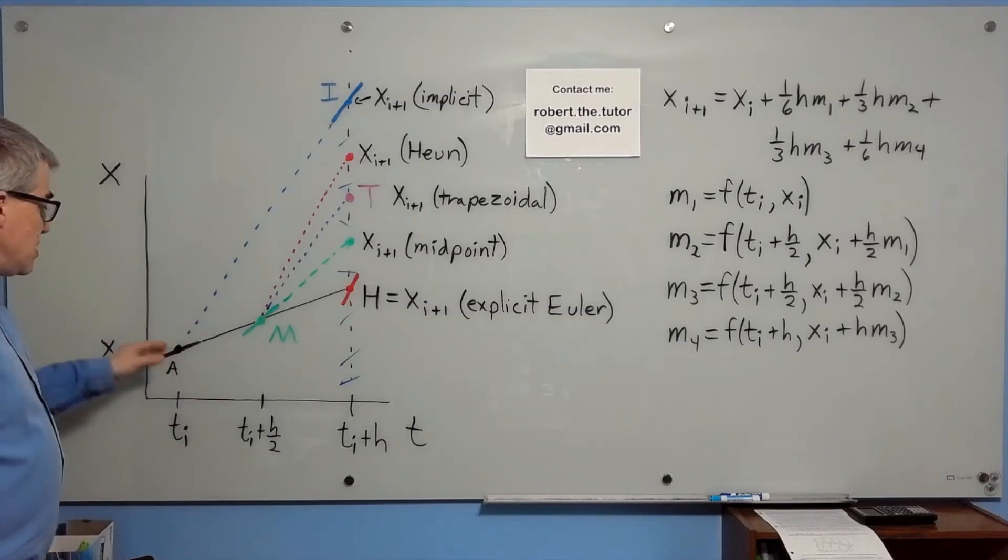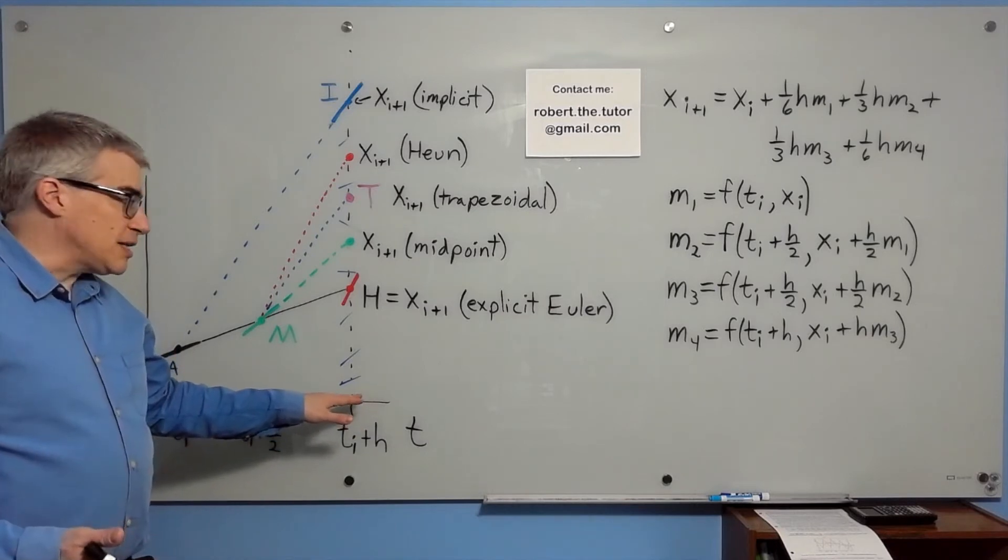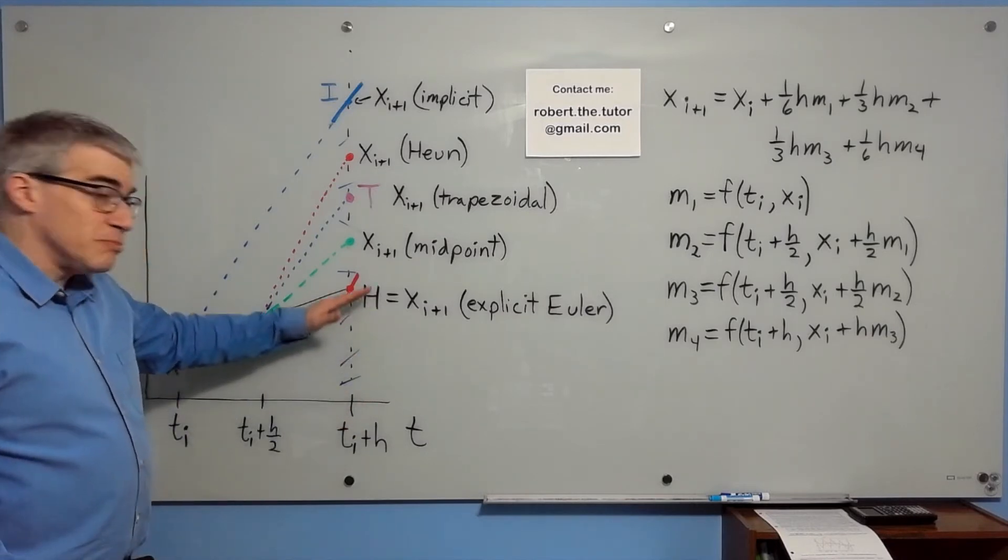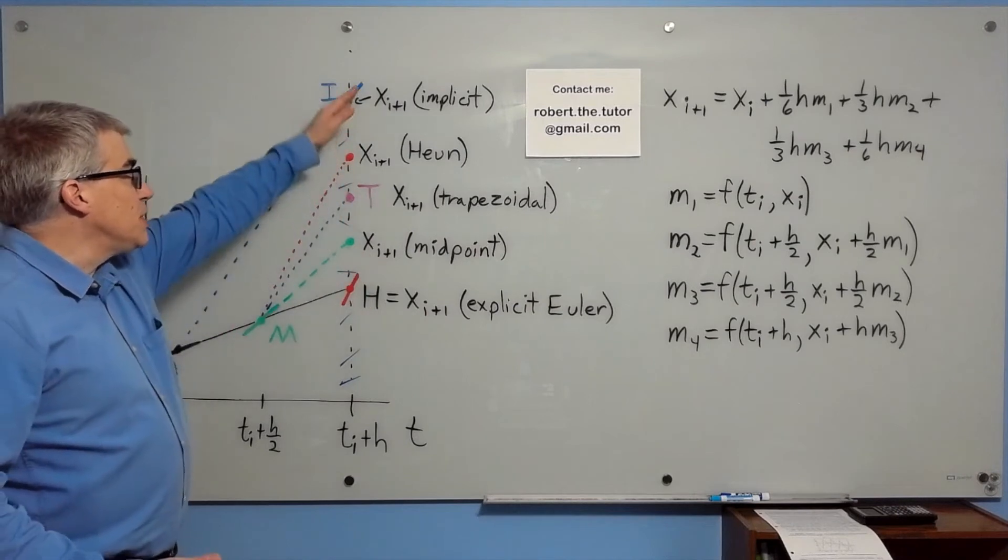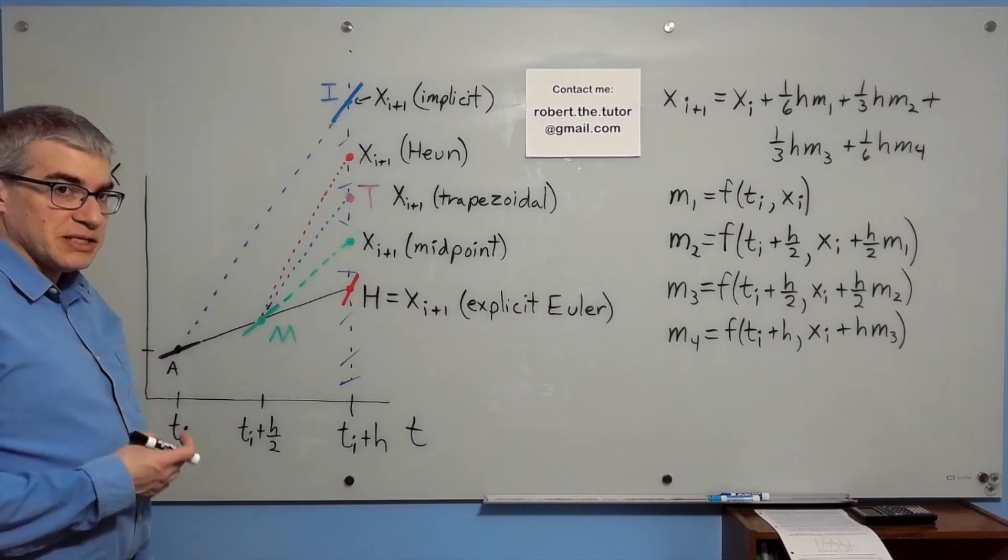For implicit, instead of taking the slope on the left, we take the slope on the right. But we don't know what the point is yet, so what's the slope? That's why it's implicit. We have to solve the equation to find out where it is, and then that's the line we use. That's the implicit estimate.